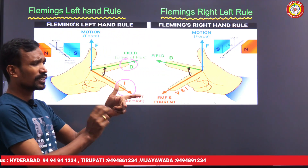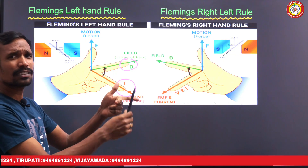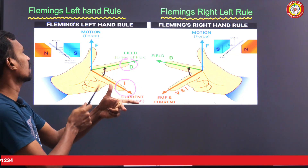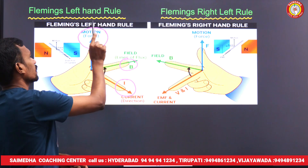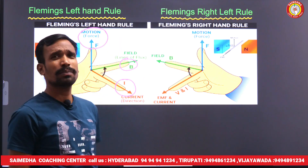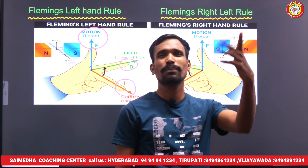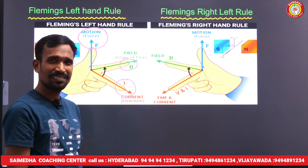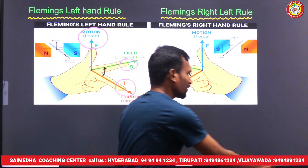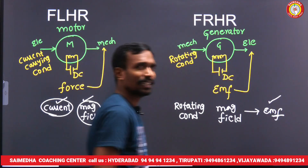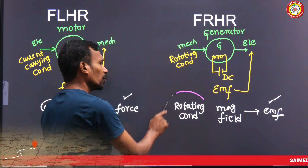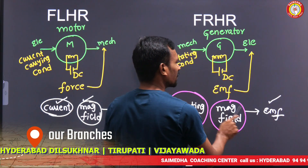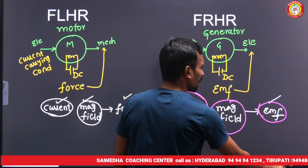The forefinger indicates the magnetic field direction. If the current direction and magnetic field direction are 90 degrees to each other, a motion — which is nothing but force — will be developed. That is the force direction, given by Fleming's left hand rule.